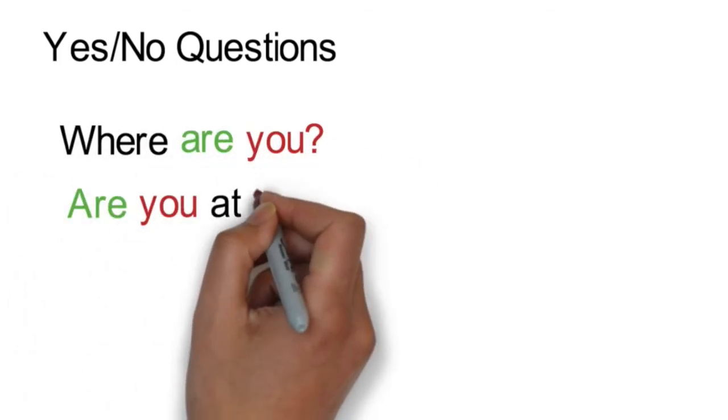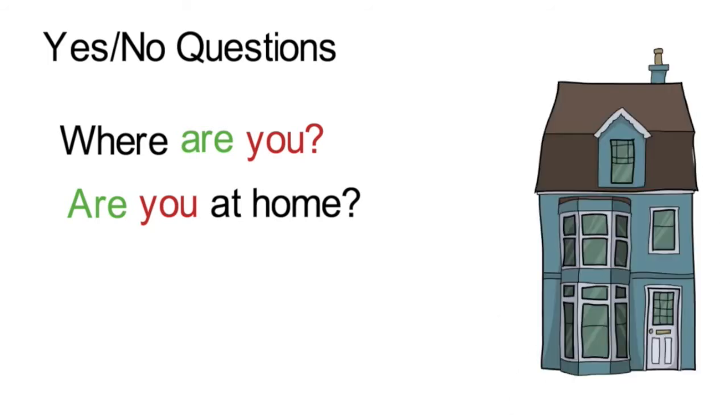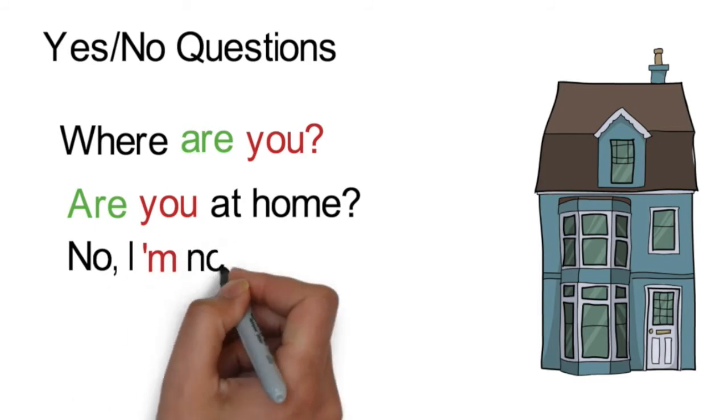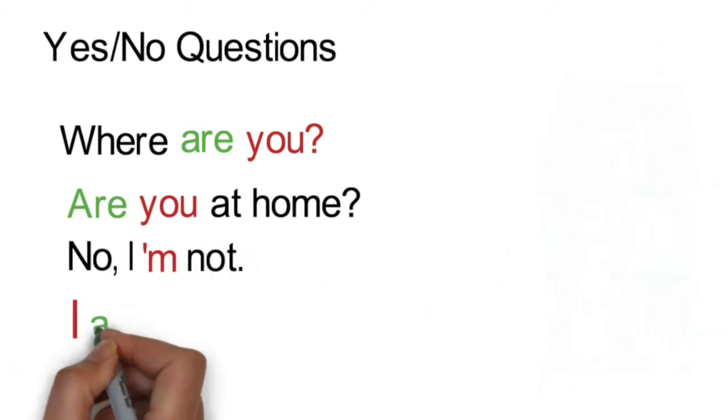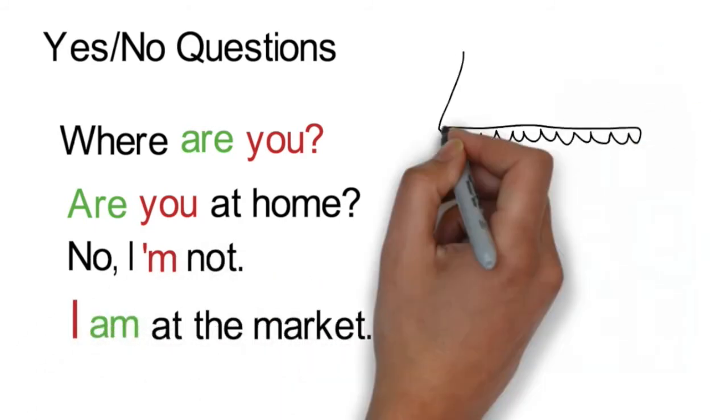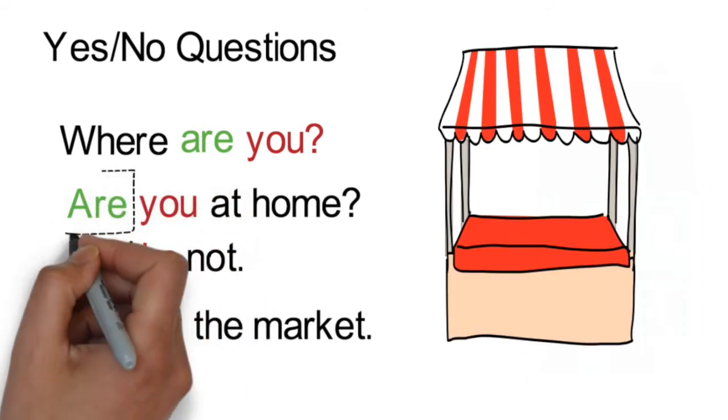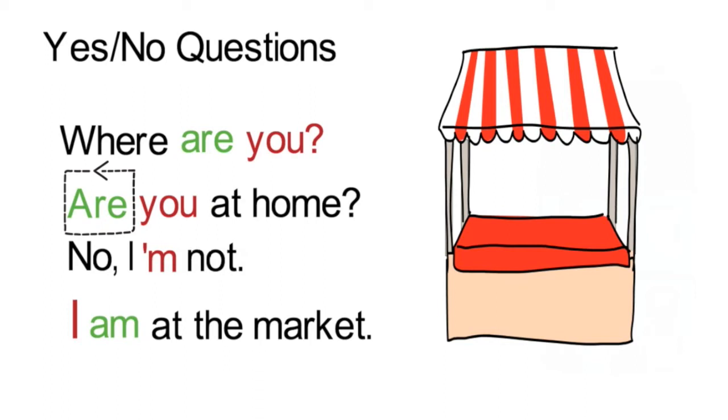For example: Where are you? Are you at home? Your answer might be No, I am not. I am at the market. In the question, we use are because it is the correct verb form for you. And in the answer, we use am because it is the correct verb form for I.